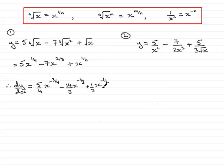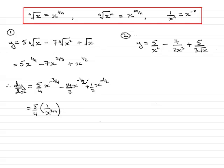Now we need to simplify these terms because they've got negative powers in. You could leave it like that, but I prefer to simplify them. So for the first term, we can think of this as 5 quarters multiplied by x to the minus 3 quarters. Now x to the minus 3 quarters — n is 3 quarters — so this becomes 1 over x to the power 3 quarters. And similarly, if I repeat this for the other two terms, I have minus 14 over 3 multiplied by 1 over x to the third. And the last term, a half multiplied by 1 over x to the power half.